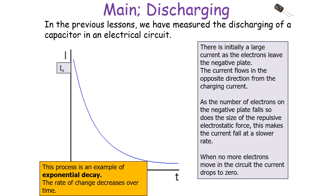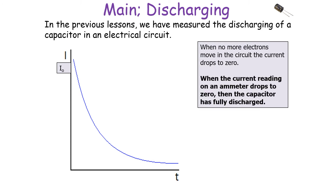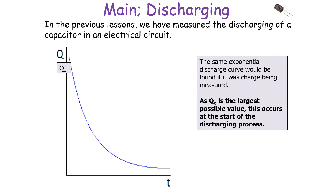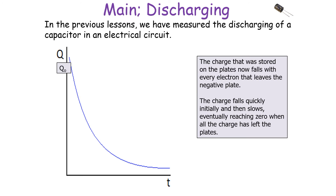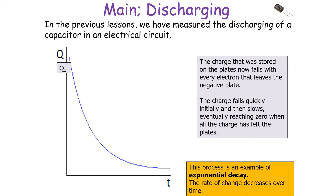This is a process of exponential decay because the rate of change decreases over time. When no more electrons move in the circuit, the current drops to zero, so we can say the capacitor is fully discharged — an easy indicator is your ammeter reading dropping to zero. The same discharge exponential curve will be found if charge is being measured. Q0 is the largest possible value, occurring at the start of discharge. The charge stored on the plates falls with every electron that leaves the negative plate, falling quickly initially then slowing, eventually reaching zero when all charge has left the plate.